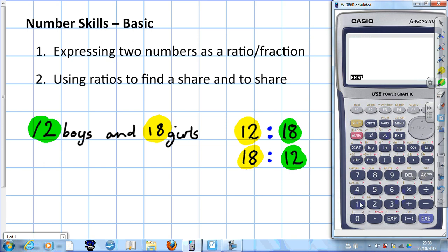Calculators don't have ratio buttons, but we can use the fraction button to do the same thing. We're going to work out the ratio 12 to 18 in its simplest form. So we type in the fraction 12 over 18, press execute, and the ratio is 2 to 3.